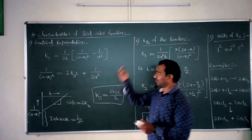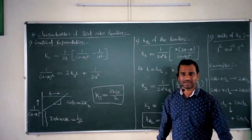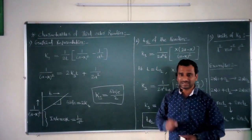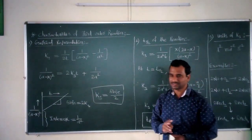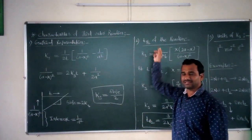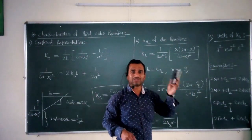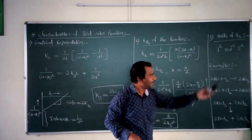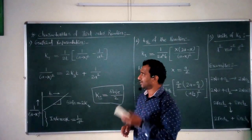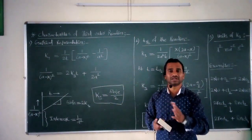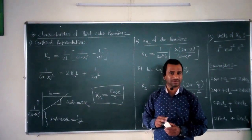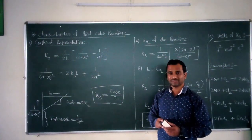In today's video lecture, we considered an important point called the characteristics of third order reaction. We studied three different important characteristics: first, graphical representation; second, T-half of the chemical reaction; and third, units of K3, that is the units of rate constant. The last part covered different examples of the particular third order reaction. We have completed this important point related to the third order reaction, and remaining points will be covered in an upcoming video lecture. Thank you.